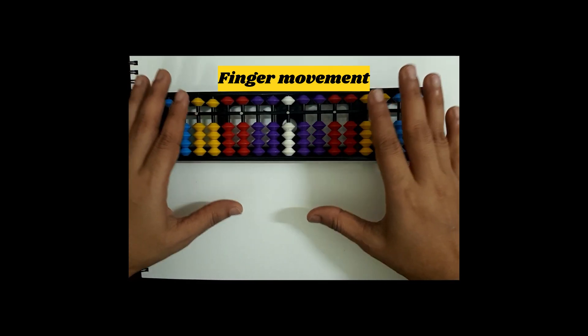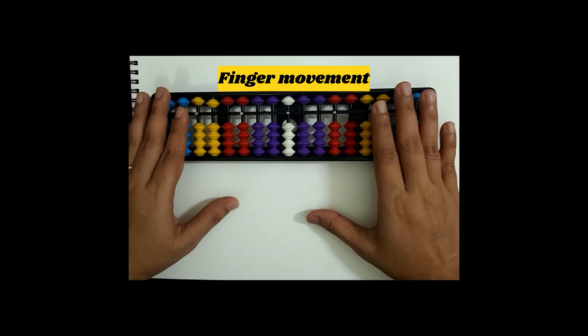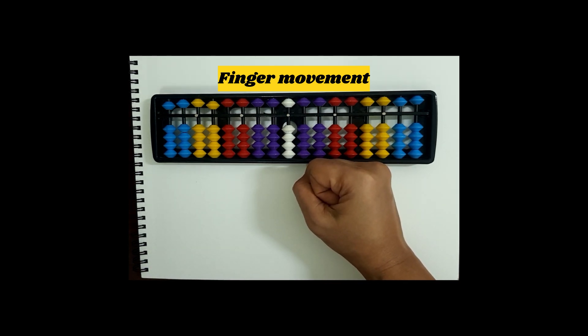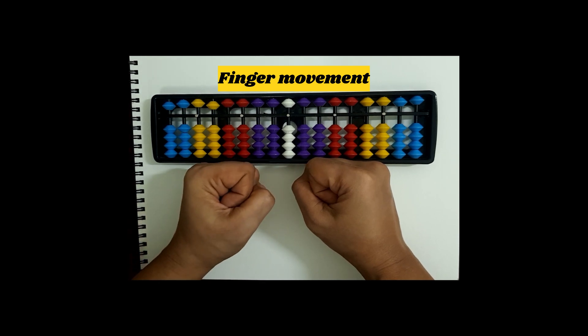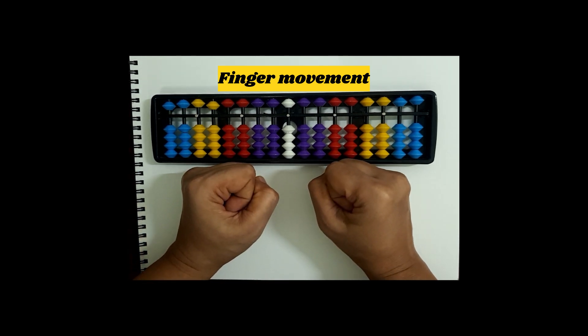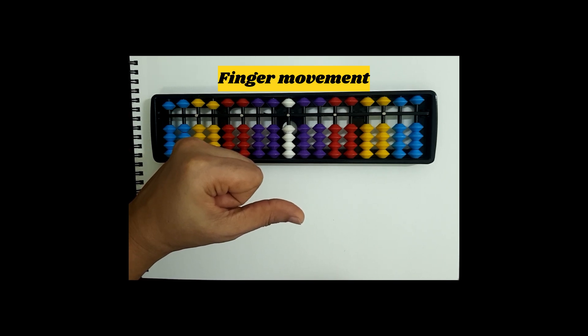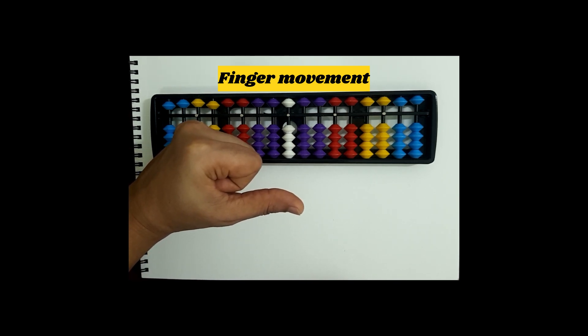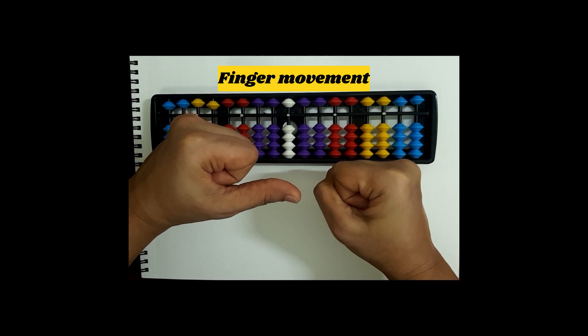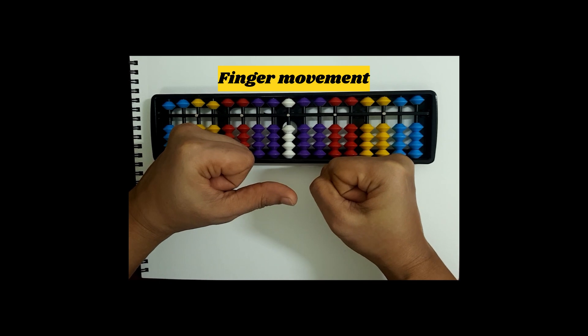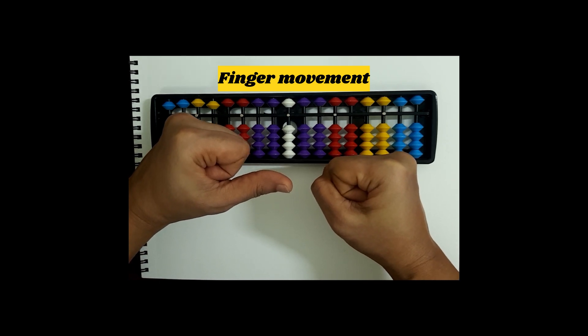Now let us know how to do finger movement for double digit numbers. As you all know, for the ones rod we use the right hand, and for the tens rod we use the left hand. Our first double digit number is 10. For 10, keep one at the tens rod with your thumb like this, and zero at the ones rod.